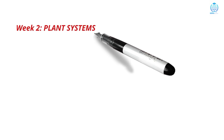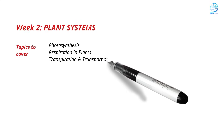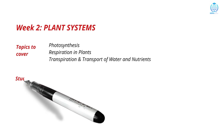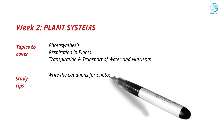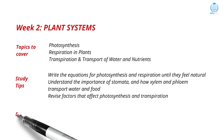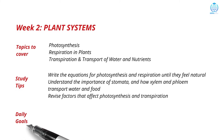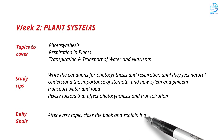Once you know what makes a single cell alive, it is time to explore how an entire plant breathes and grows. The topics include photosynthesis, respiration in plants, transpiration and transport of water and nutrients. Keep on writing each concept multiple times to reinforce it. Understand the importance of stomata and how xylem and phloem transport water and food. Revise factors that affect photosynthesis and transpiration. After every topic, close the book and explain it aloud — even to yourself in front of a mirror. Teaching yourself strengthens memory far more than reading silently.